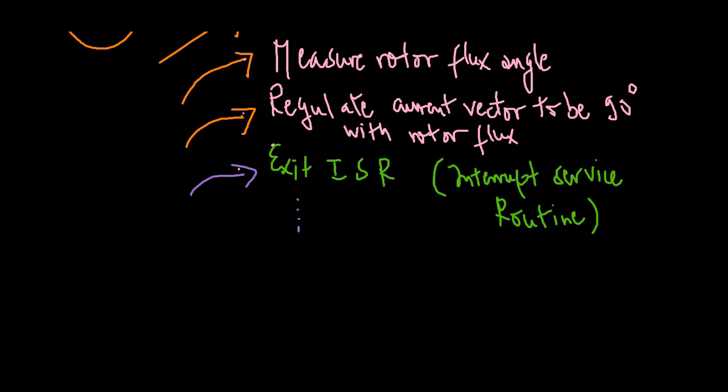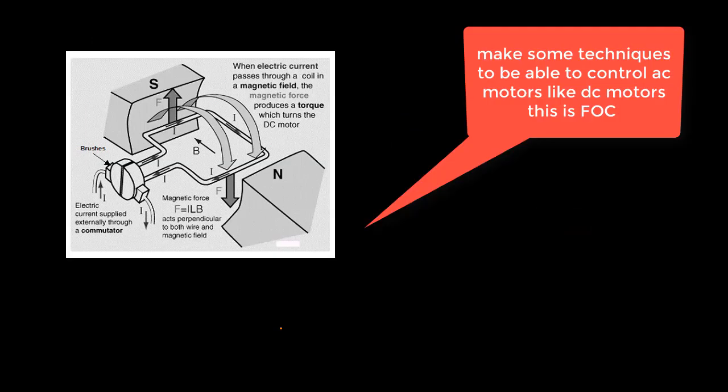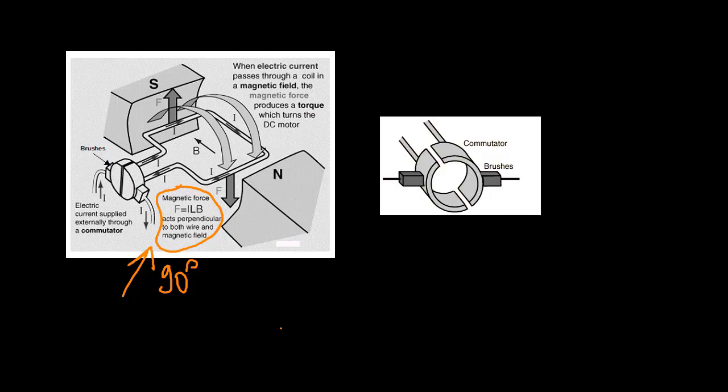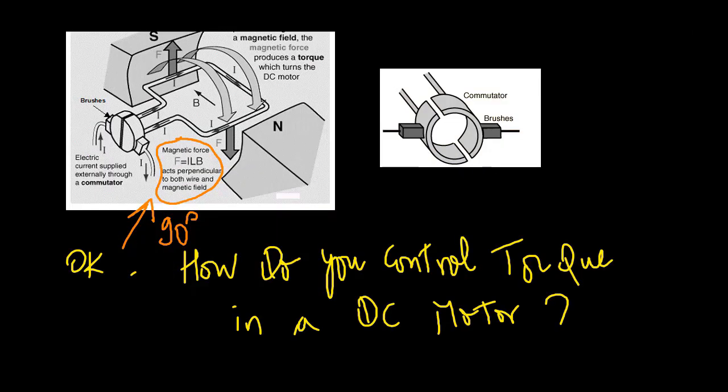Field oriented control, FOC, was developed in the early 1970s and made it feasible to control the induction motor as a separately excited DC motor. All motors do field oriented control in one form or another. Even brush DC motors do FOC — they just accomplish it mechanically by using brushes and a commutator. Controlling the torque on a brush DC motor is fairly easy to understand, so let's start with that.